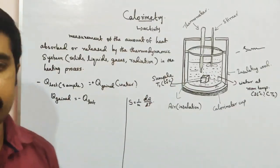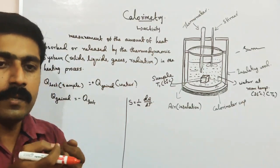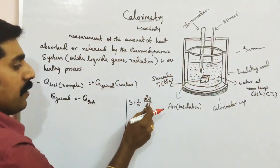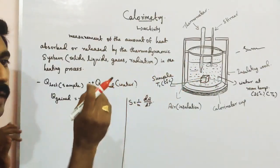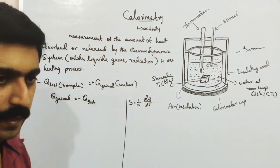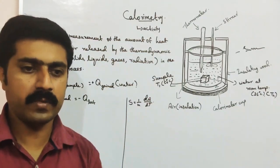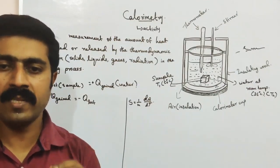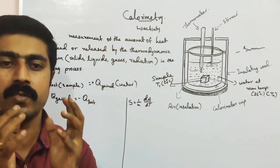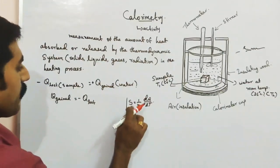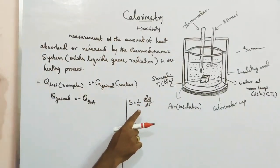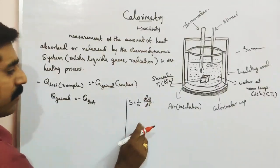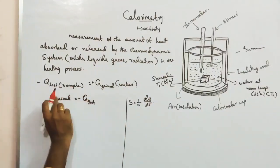Specific heat capacity is the amount of heat energy required to raise the temperature of 1 kg of substance by 1 degree Celsius or 1 Kelvin. Here, Q is heat energy, M is mass, S is specific heat capacity, and DT is the change in temperature. Q is equal to M × S × ΔT.